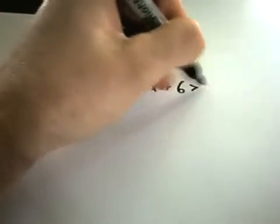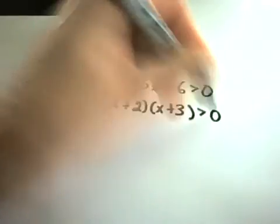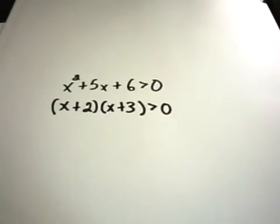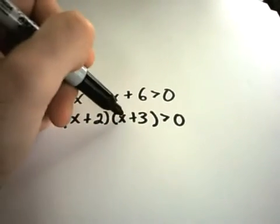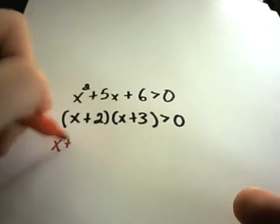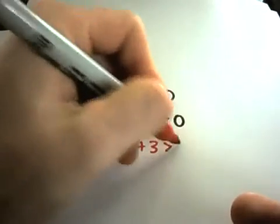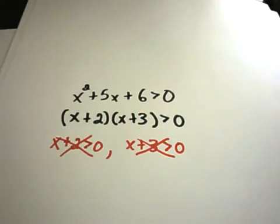People will make the mistake, when trying to solve the quadratic inequality x plus 2 times x plus 3 greater than 0, of doing the same thing they'd do for an equation — saying x plus 2 has to be greater than 0 and x plus 3 has to be greater than 0. That is absolutely not correct. Do not do that; it is not the correct way.